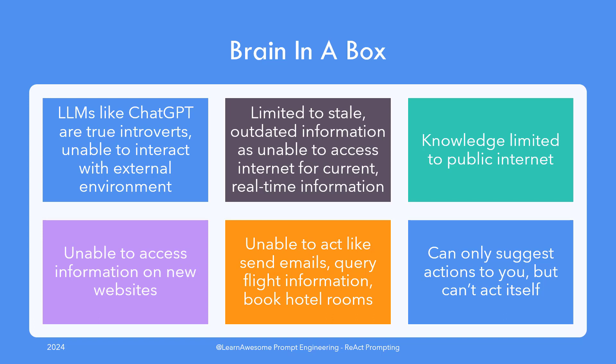Up until recently there used to be a cutoff date for training the model, so if you ask it some question regarding an event that occurred past that date it would simply be unable to answer. Similarly the tool has been trained on public internet, but what if you need to find some details not present on public internet — like whether there's a non-smoking room available on certain dates at a particular hotel? It is unable to service your query. And finally, what if you want to take some action on your behalf, like book the hotel room? It's utterly useless in current form as it is unable to interact with any external entity and can only suggest what you need to do yourself.